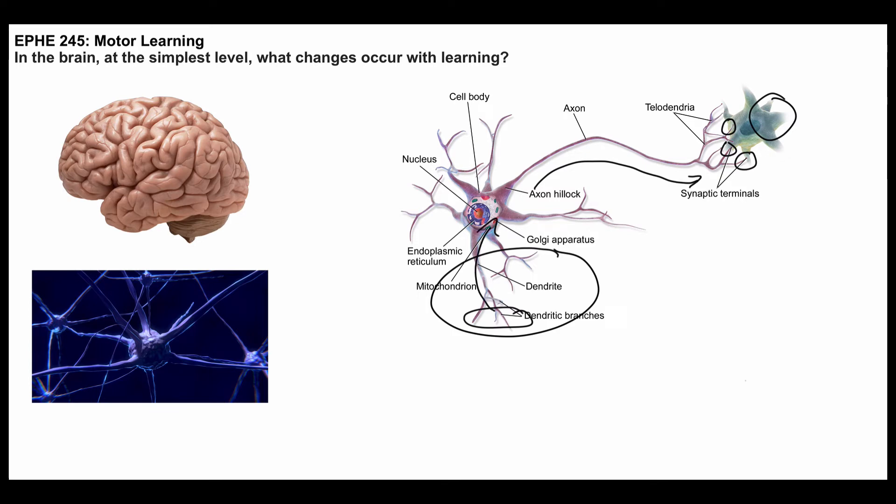If there's enough information, this neuron fires, and this process continues. That's neural communication in a nutshell.